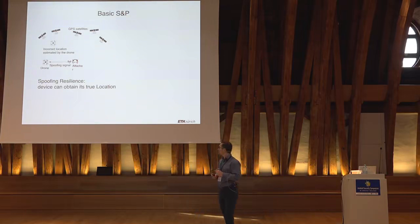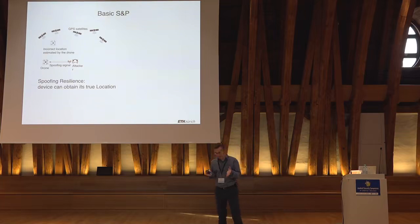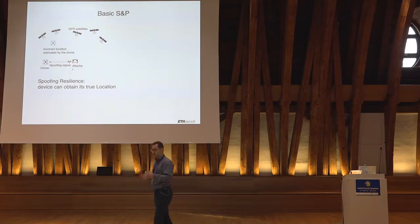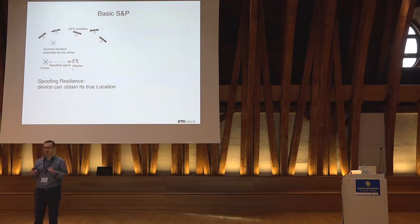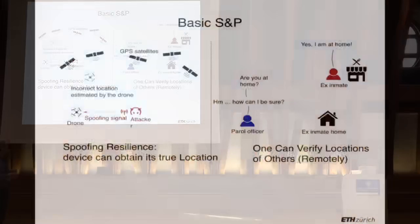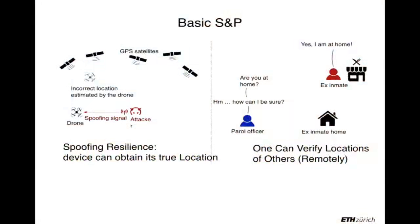What are the basic security properties you want out of a positioning system? Primarily, spoofing resilience — where a device that wants to determine its own location does so correctly in the presence of an adversary trying to influence that location. You can also have scenarios like wanting to verify your kids' location securely, or verifying that someone is connecting from a particular location.